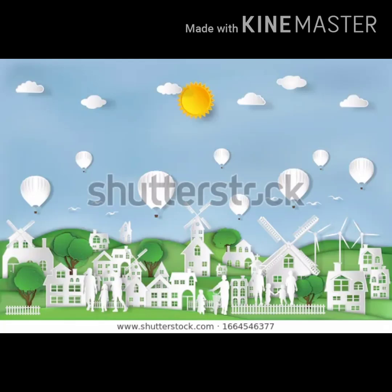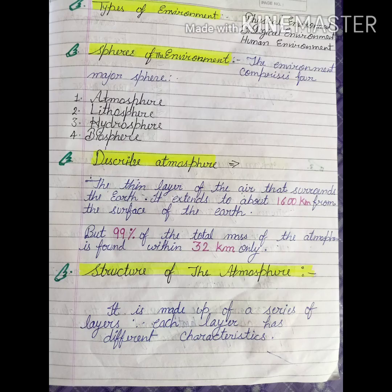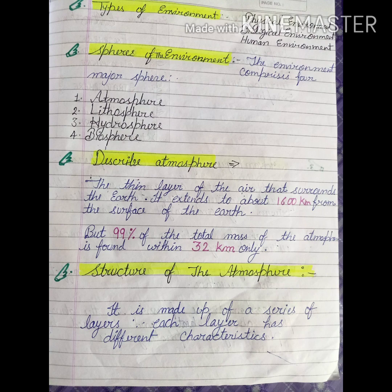Good morning students, hope you are enjoying your vacations. In the last session we studied about some parts of our environment. I divided this chapter into two parts: types of environment and spheres of the environment. Types of environment — physical, biological, and human environment — we already learned. In this session we start with the spheres of the environment.